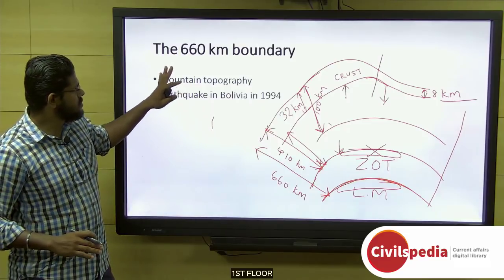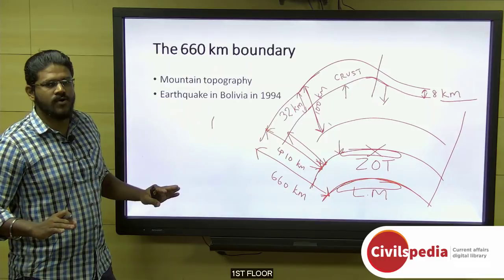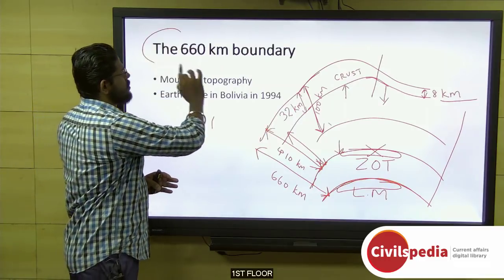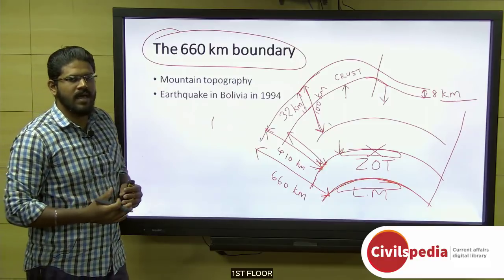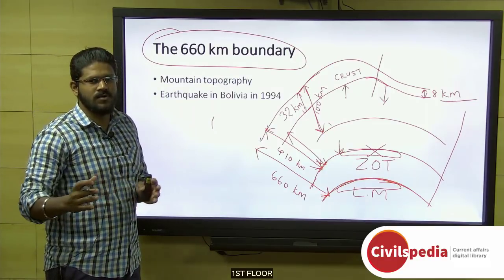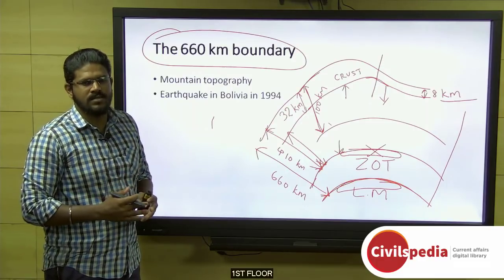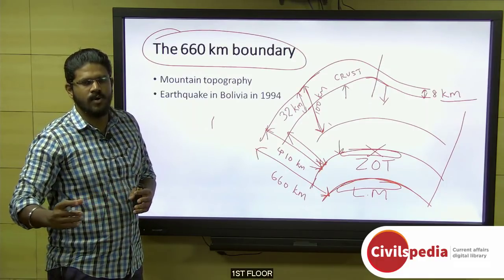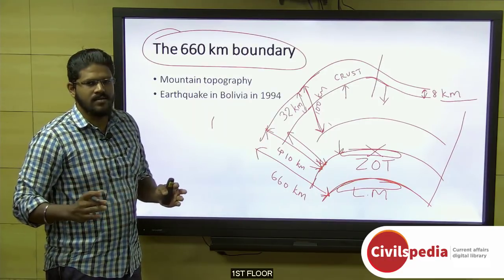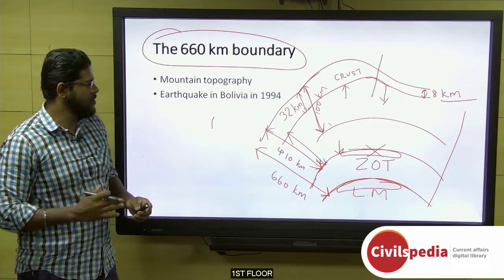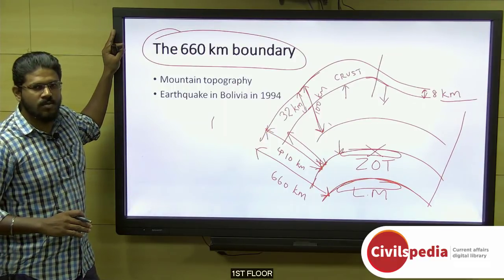This discovery is currently referred to as the '660 kilometer boundary' since it has not yet been formally named. For exam purposes, a prelims question could ask what the term refers to, with options like 'two layers of atmosphere' versus 'discovery of mountain topography in the earth's interior.'